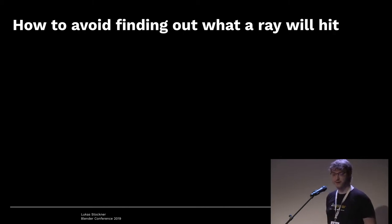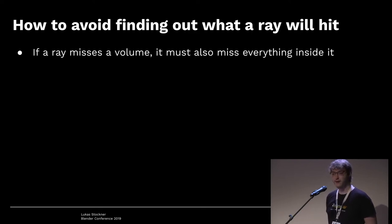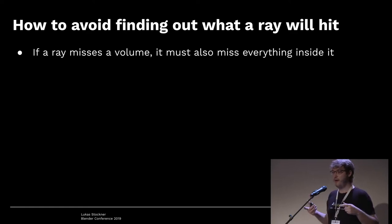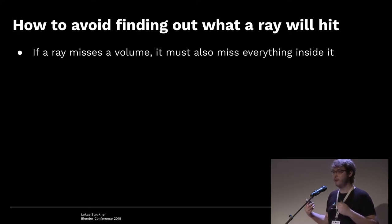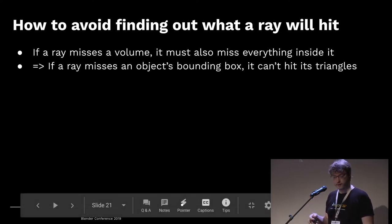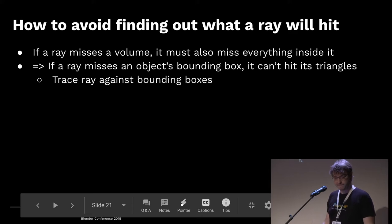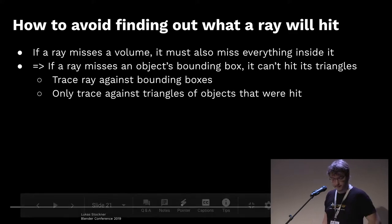So we need to do something smarter. The idea is: if a ray completely misses a volume in space, it also can't hit anything inside it. So we can first test against the volume, and if we miss that, skip the entire object. We can use the bounding box of the object — if the ray completely misses the bounding box, just skip the object.